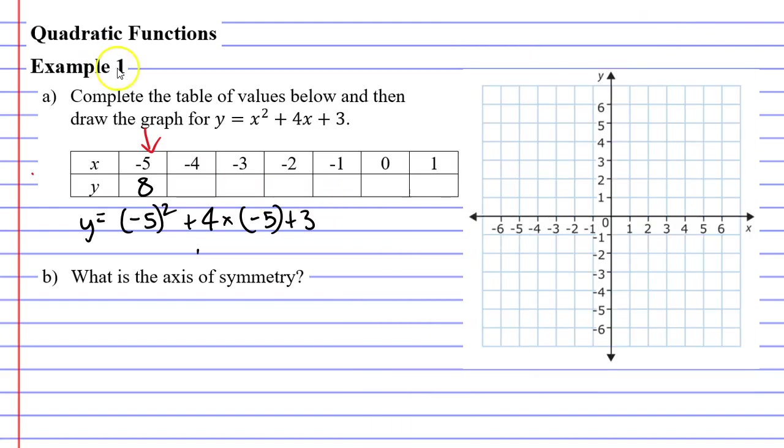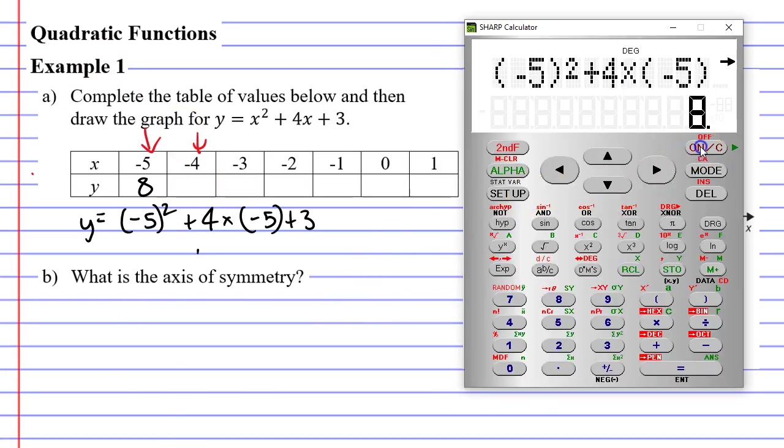Alright, let's move on to the next column when x is negative 4. We'll follow the equation again. Starting with x squared, so we go negative 4 squared. Then it tells us to add 4 and times this by x. So plus 4 times x which is negative 4. And then finally add 3. And for this one we get 3.